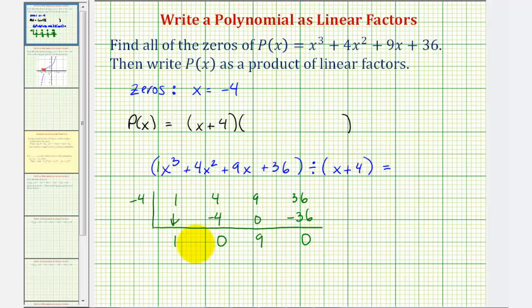This also tells us the quotient is 1x² + 0x + 9, or just x² + 9. And therefore, if this quotient equals x² + 9, the polynomial function would have to be (x + 4)(x² + 9).